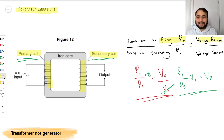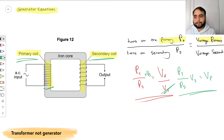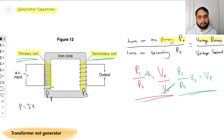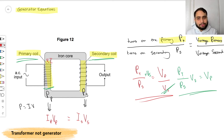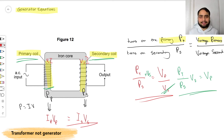Our second transformer equation compares the power in each coil. Since power equals current times voltage (P = IV), the power in the primary equals the power in the secondary: Ip × Vp = Is × Vs. This makes sense because there is voltage and current flowing in both coils — they're just different due to the ratio of turns. And that is our second transformer equation.